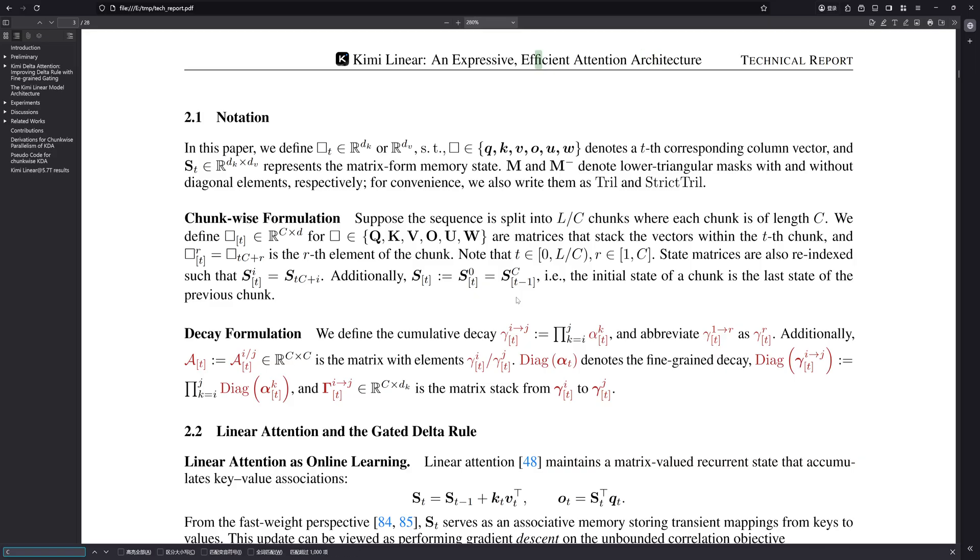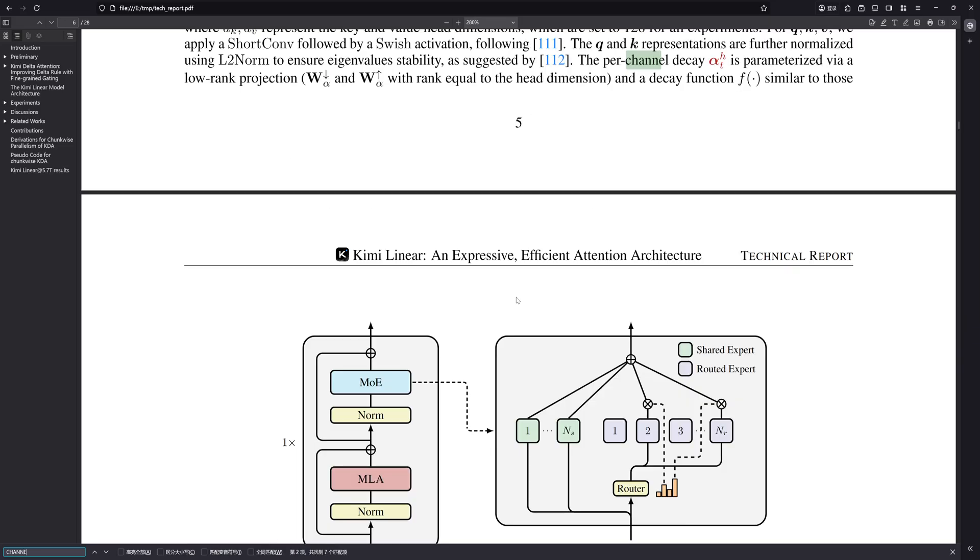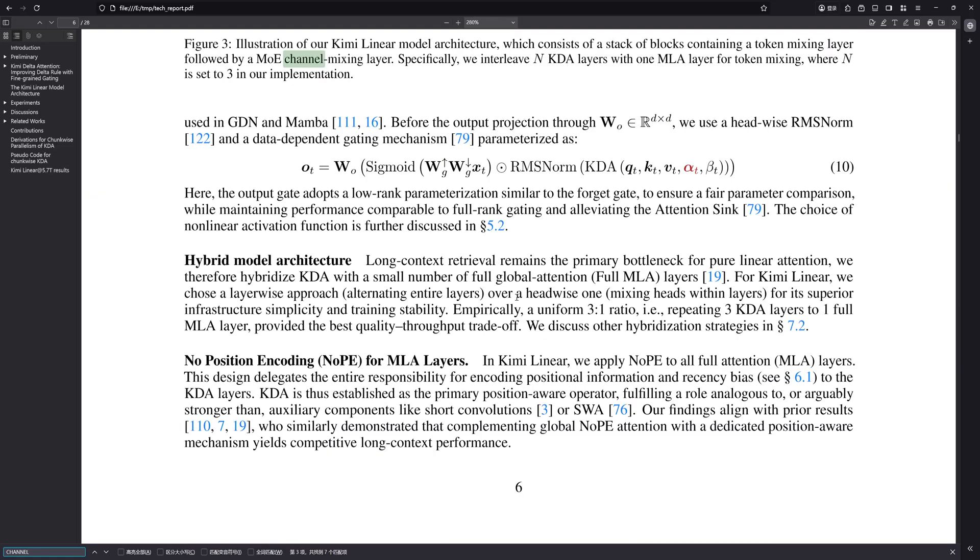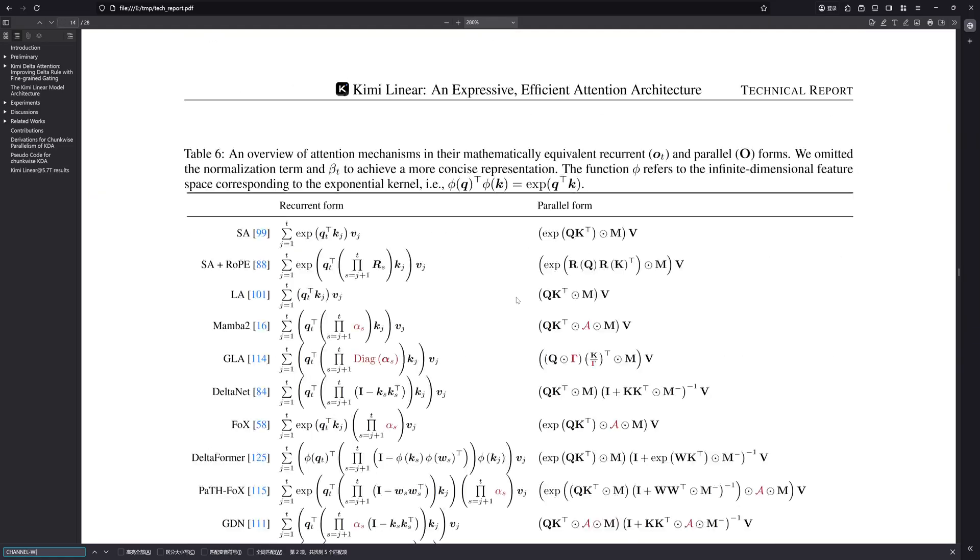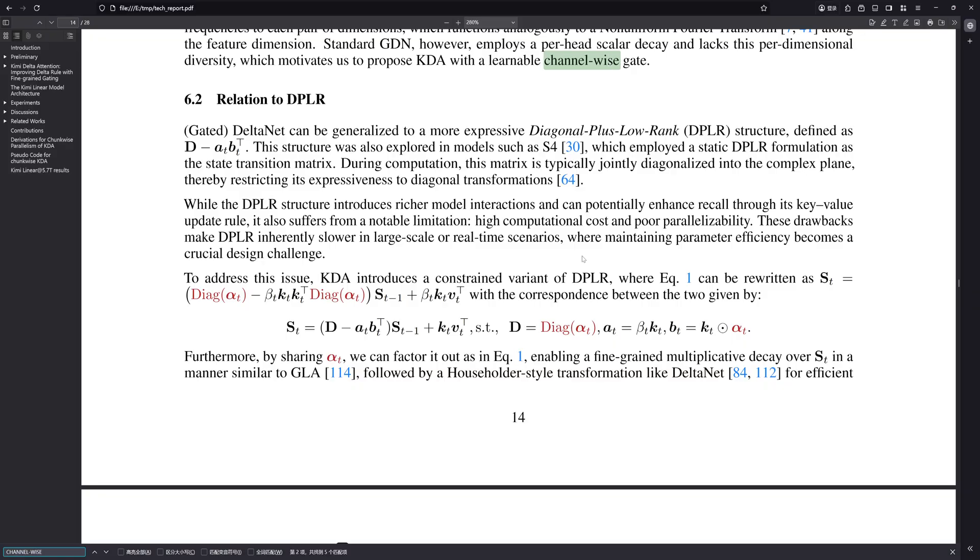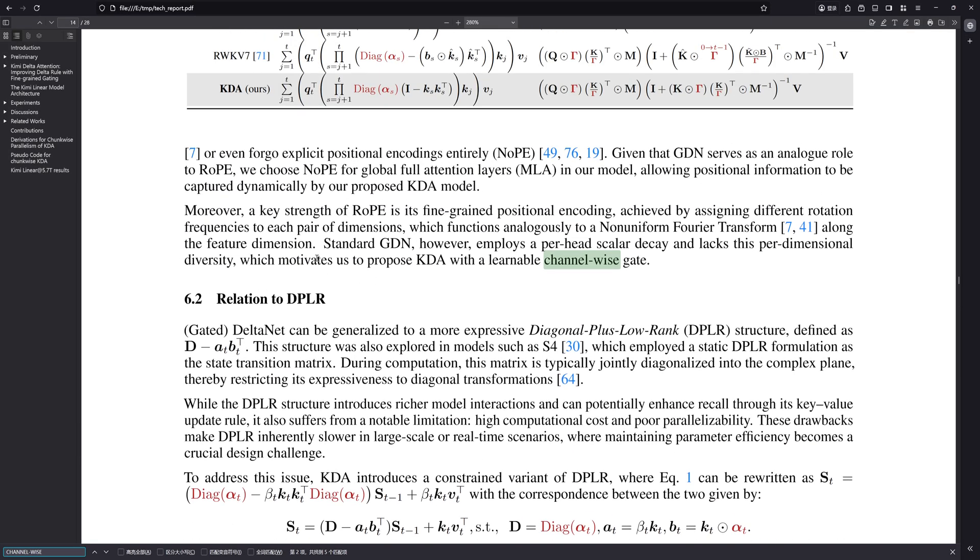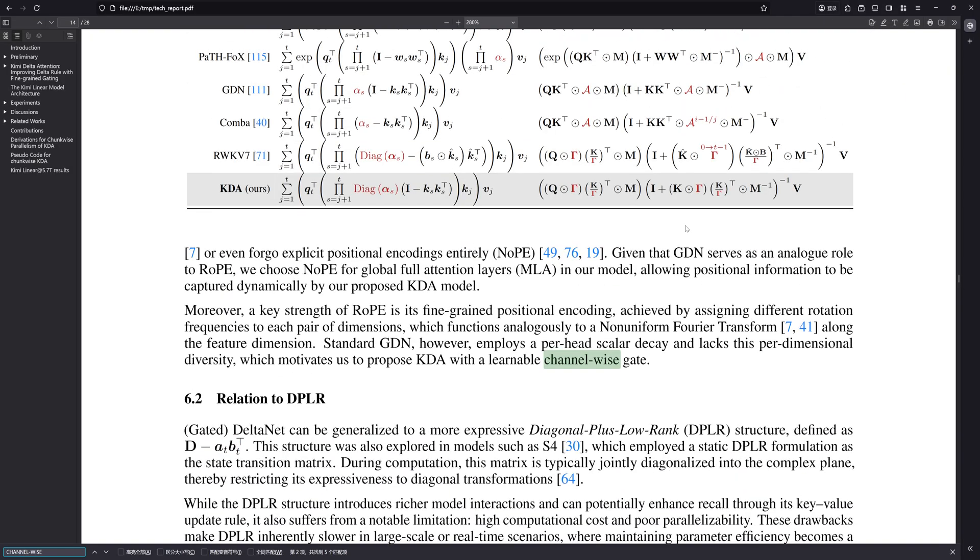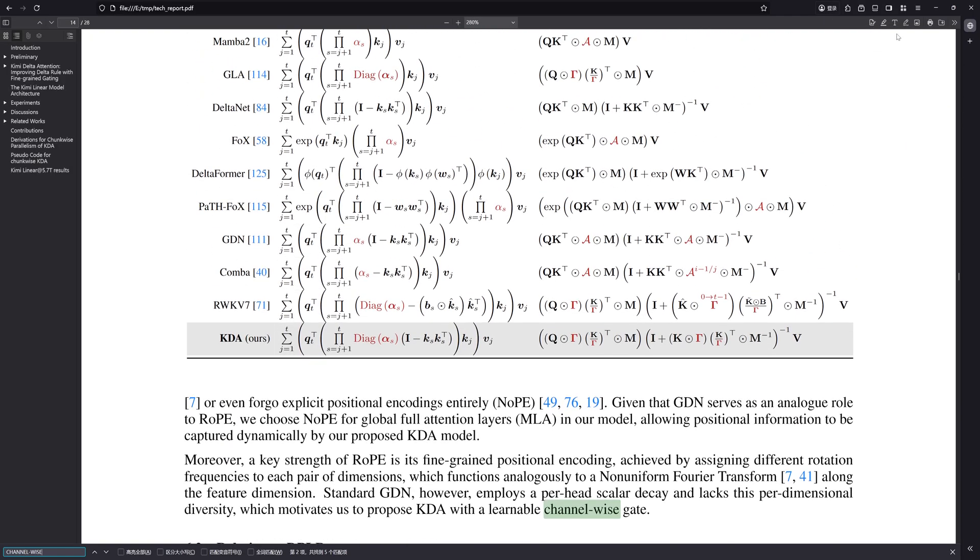Okay, that's a useful analogy for the mechanism. But the impact? Well, the impact is huge, I think. It lets KDA manage that finite state memory with much finer control. Each feature dimension gets its own learnable rate of forgetting. This isn't just about efficiency. It's about representational power.